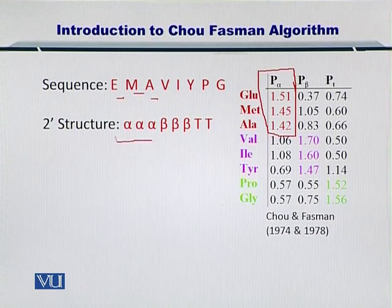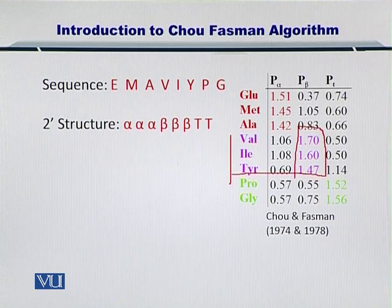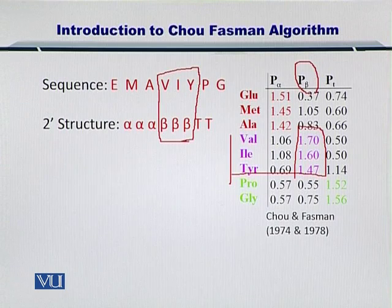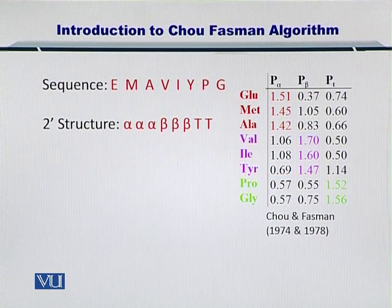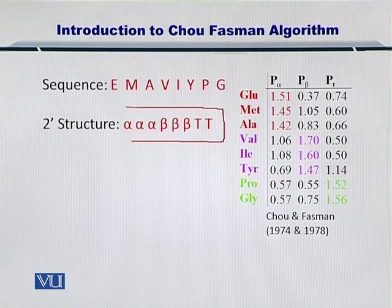Therefore, we make alpha helices out of these three amino acids as shown here. Next, if you look at the propensities for valine, isoleucine, and tyrosine, then they are most probably forming a beta sheet. In this case, we have constructed beta sheets out of these amino acids. Next, if you look at proline and glycine residues, you can see that they form turns, and therefore we have assigned turns to these two. Now, this is the secondary structure of a protein that has the sequence given here.